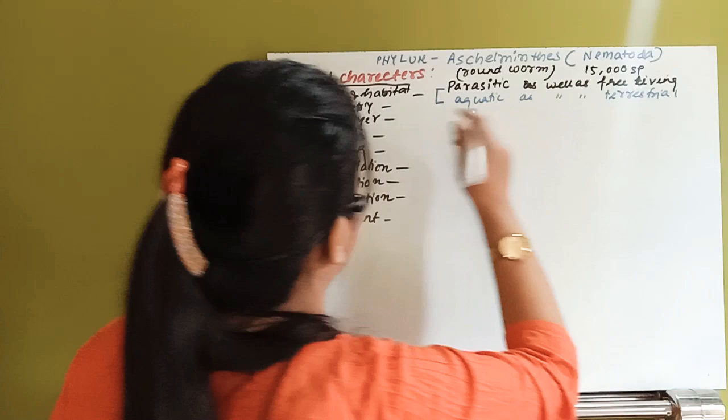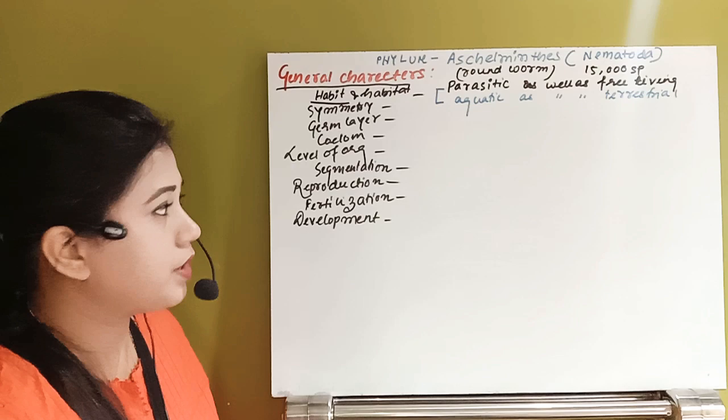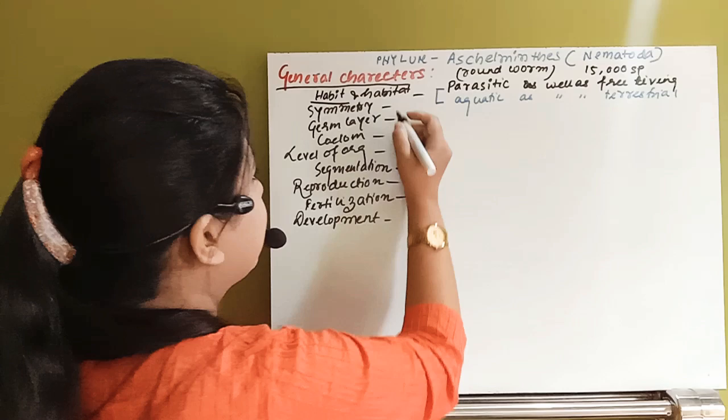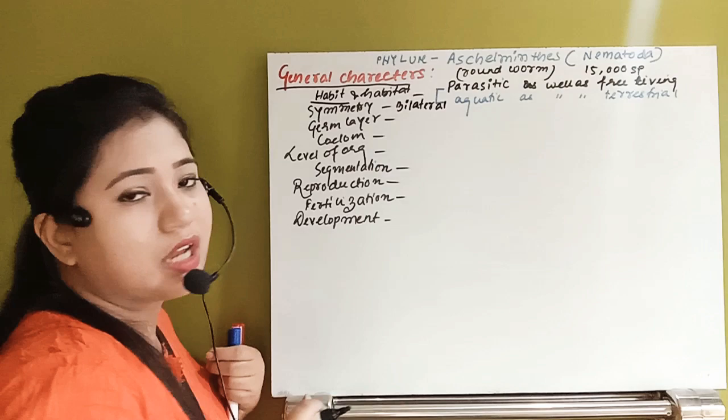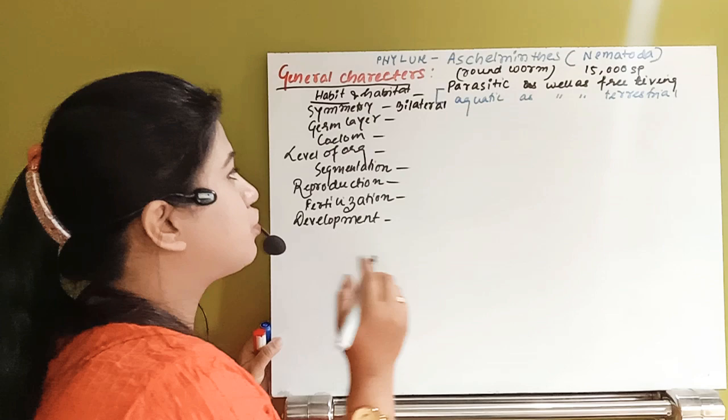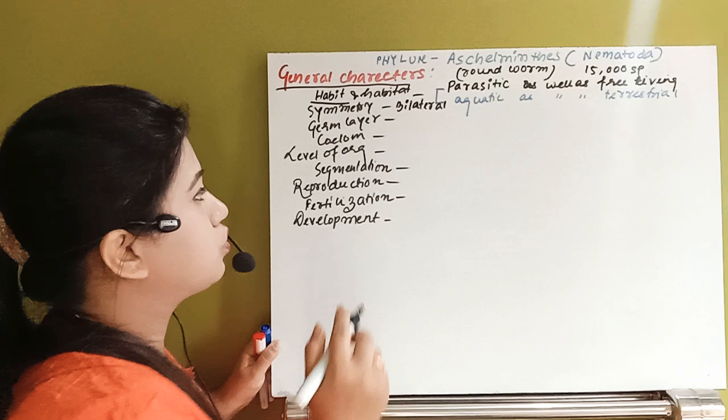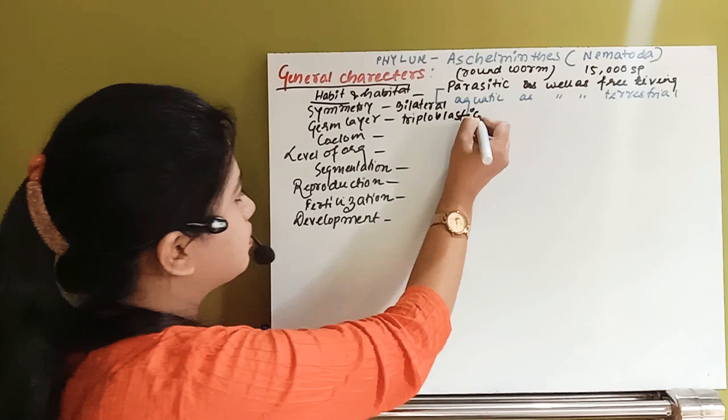Regarding symmetry, this organism has bilateral symmetry. If it comes to germ layers, this organism has fully well-developed three germinal layers: outer ectoderm, inner endoderm, and the middle mesoderm. So this organism is triploblastic.